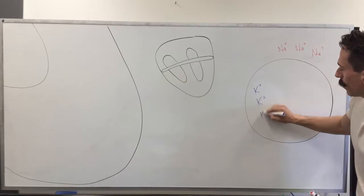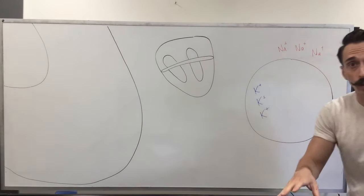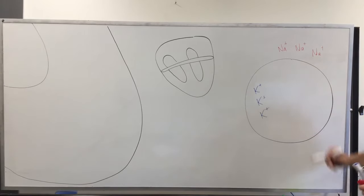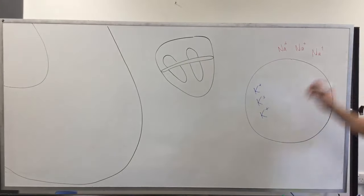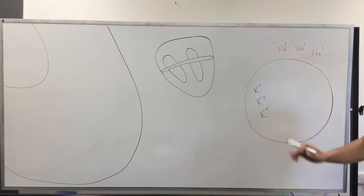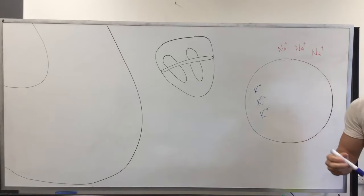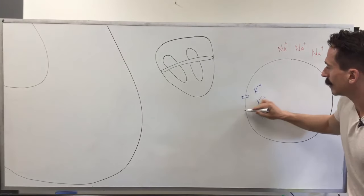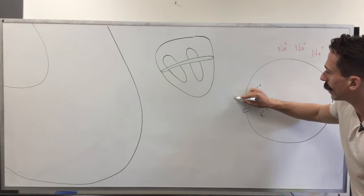As we all know from basic biochemistry, ions like to go down their concentration gradient. So sodium wants to go down its concentration gradient and go inside the cell. Potassium wants to go down its concentration gradient and go outside the cell. The thing is that sodium can't go inside the cell because the channels for sodium are shut. Potassium, however, does have channels that are open, so potassium can freely exit the heart muscle cell.